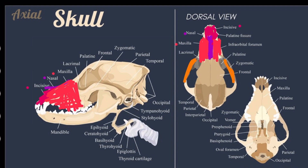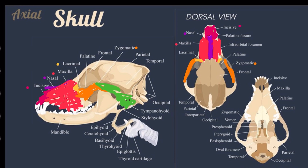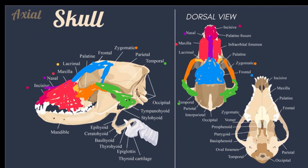Next is the zygomatic, which forms the cheekbone. Next is the lacrimal bone, or prefrontal bone. It lies at the medial surface of the orbit, which houses the eye. Next is the temporal. The most ventral part of the bone forms the rounded prominence called the tympanic bulla, which houses the structures of the middle ear. The frontal is the rostral part of the roof of the cranial cavity. In animals that possess horns, the cornual process arises from the frontal bone.